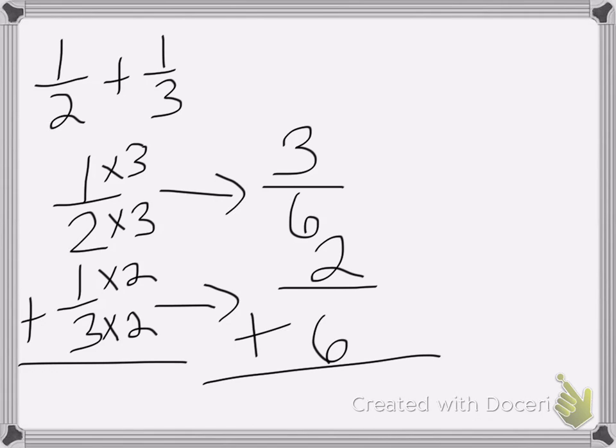Now I can add these two numbers, 3 sixths plus 2 sixths is equal to 5 sixths. And that's my answer.